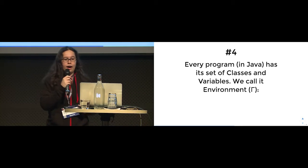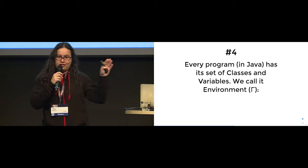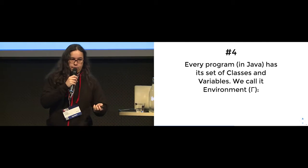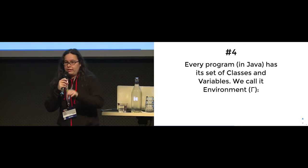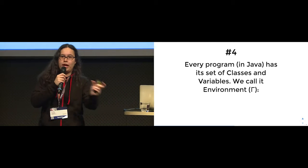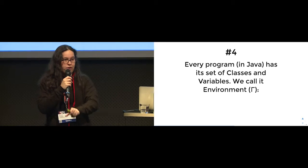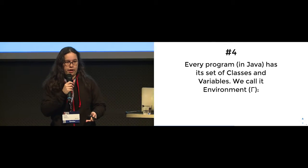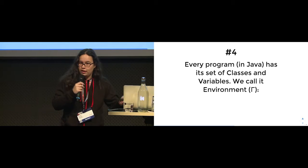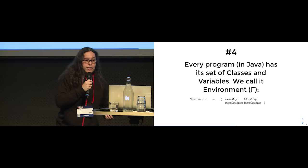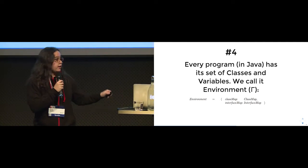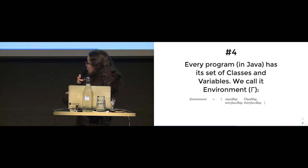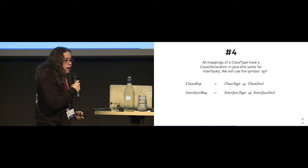Every program in Java has its set of classes and variables — that's data and operations. For a program composed of classes and variables, we call this an environment. We have to be precise about the domain we're talking about. For Java, a single application will have a main method running the code, or a server with a main method running a thread. So in a Java environment, I have a group of classes and a group of interfaces. A class map is a bunch of classes of a certain type that have a class declaration — either written by me or someone else. We use this mapping symbol to illustrate that there is a mapping.